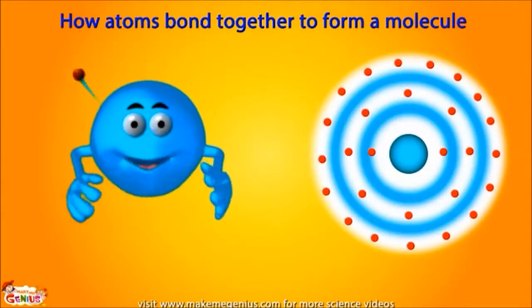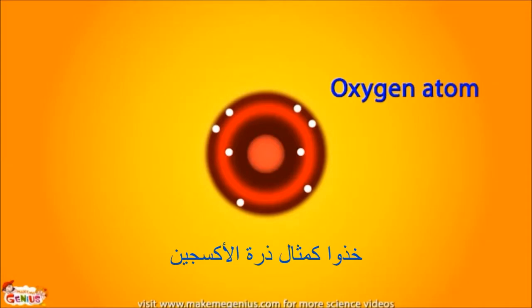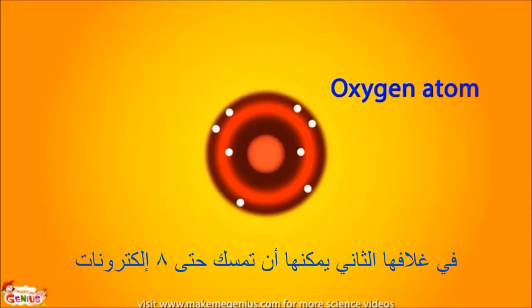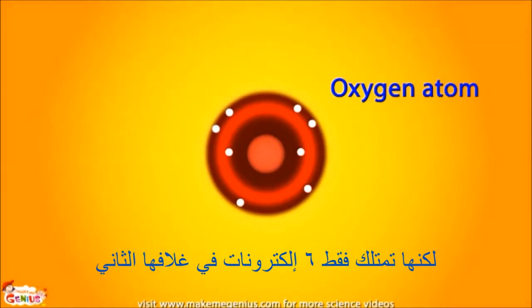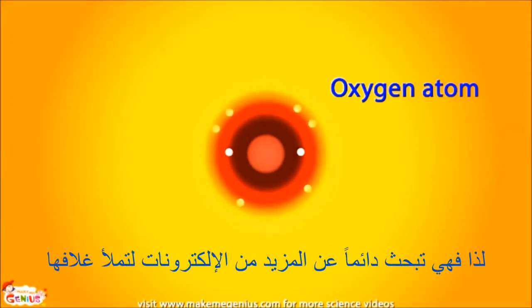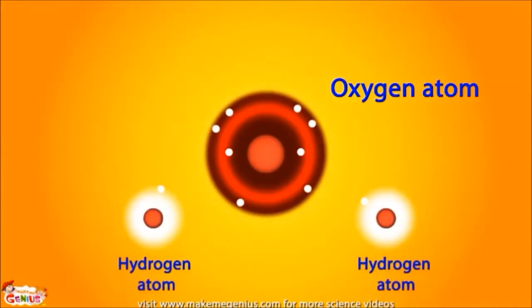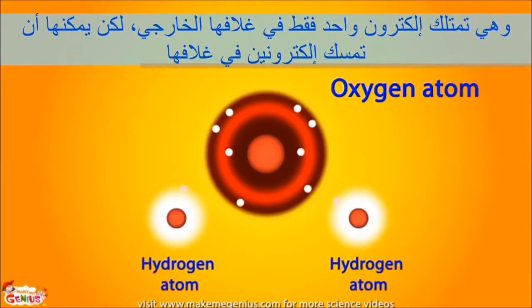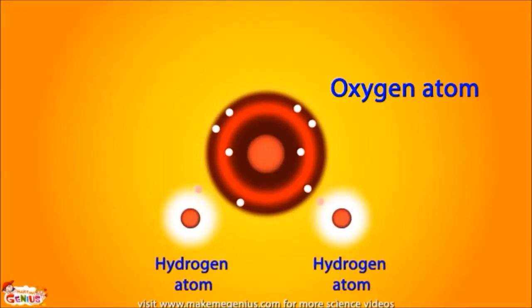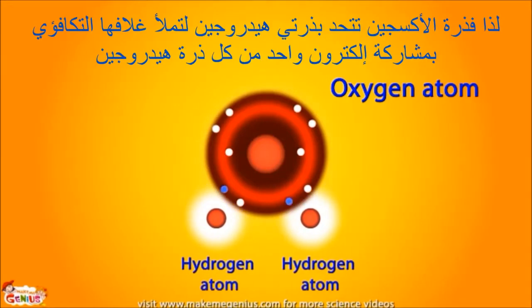Atoms bond with other atoms to form a molecule with these valence electrons in the valence shell. Remember one thing — atoms always keep trying to fill their shells. Take, for example, an oxygen atom. In its second shell, it can hold up to eight electrons, but the oxygen atom only has six electrons in its second shell, so it is always looking for more electrons to fill its shell. Here is a hydrogen atom. It only has one electron in its outer shell, but it can hold two electrons in its shell, so it is also looking for more electrons. So the oxygen atom bonds with two hydrogen atoms to fill its valence shell by sharing one electron from each hydrogen atom.